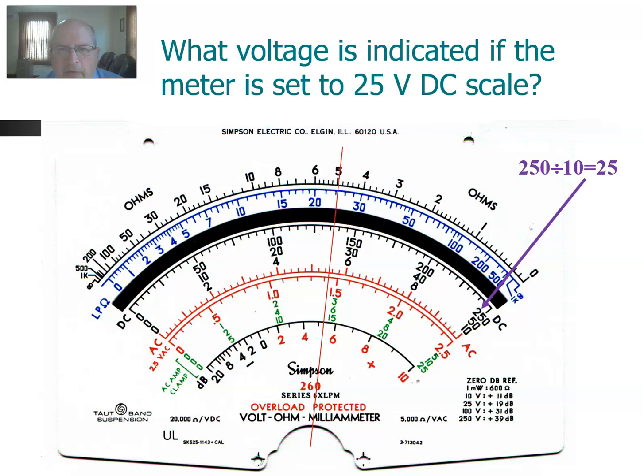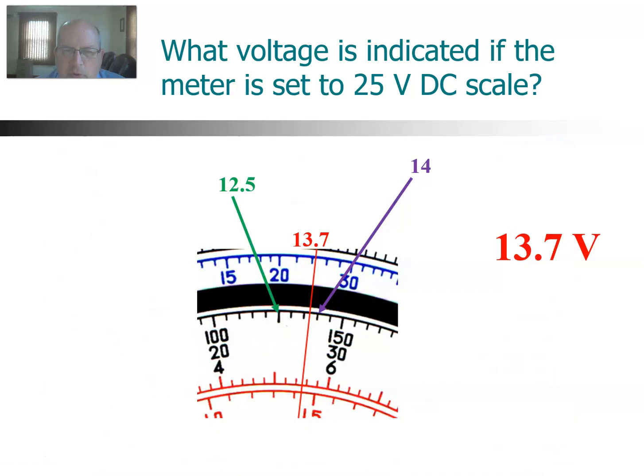Here's another reading. This time we're on the 25-volt scale. When we go here to determine which set of numbers to read, we run into a problem because there is no 25. However, there's a 250, and we can take that 250 and divide it by 10. So we can use the top set of numbers, but just remember to divide by 10. We're reading the top set of numbers, dividing by 10. So this is 10 volts, this is 15. So halfway is 12.5 volts. Somewhere between 13.5 and 14 volts. I'm going to call it 13.7 volts. Don't just stop at 13. You've got to judge how far it is between these small hash marks. So 13.7 volts DC.